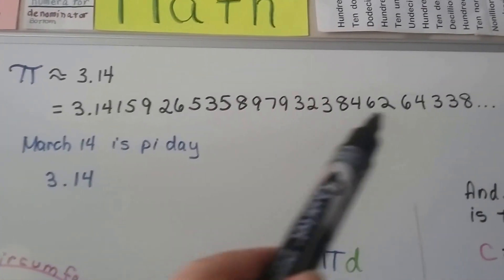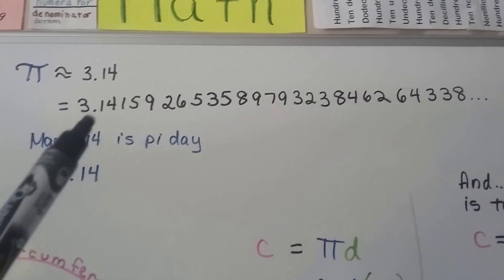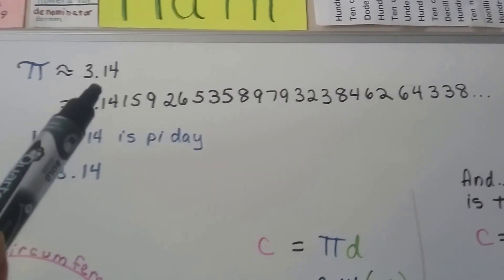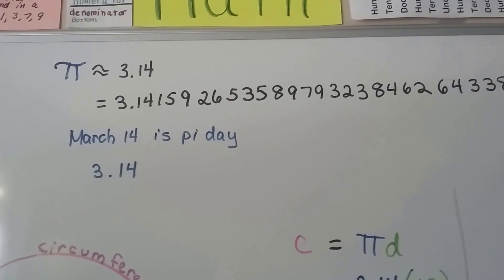And look, here's just some of the digits of pi. So now you can see why we just use 3.14 and the approximation symbol.